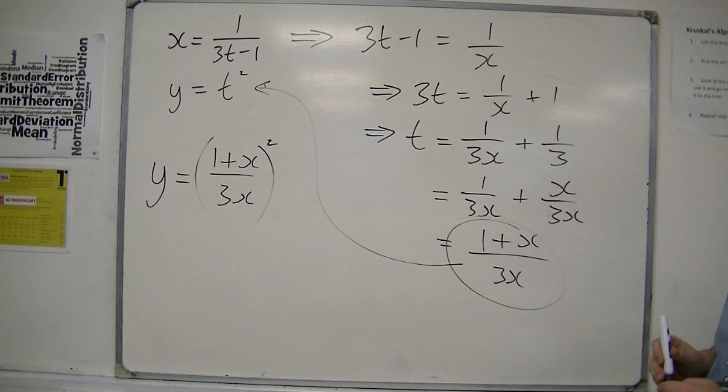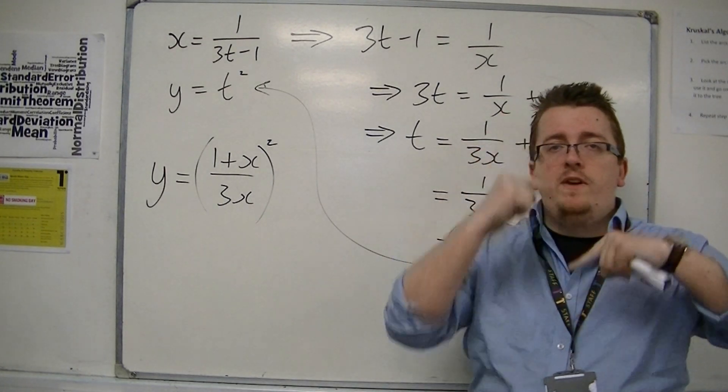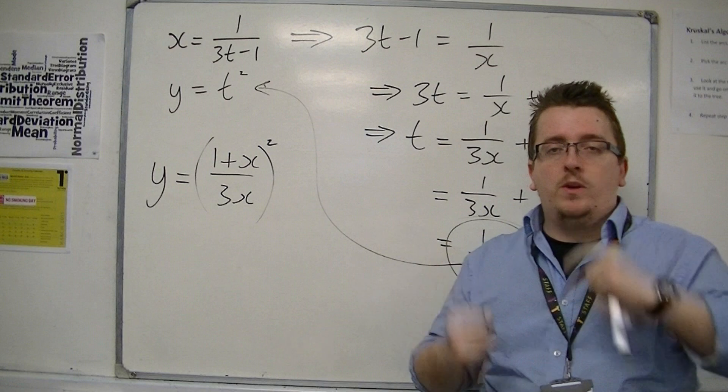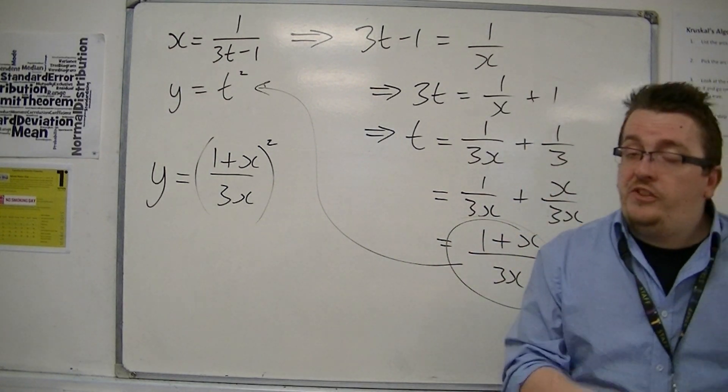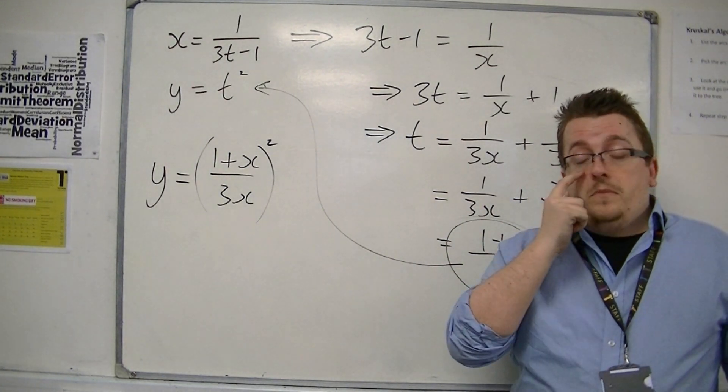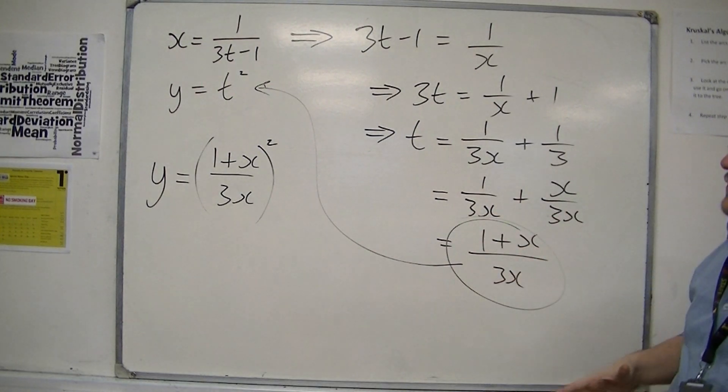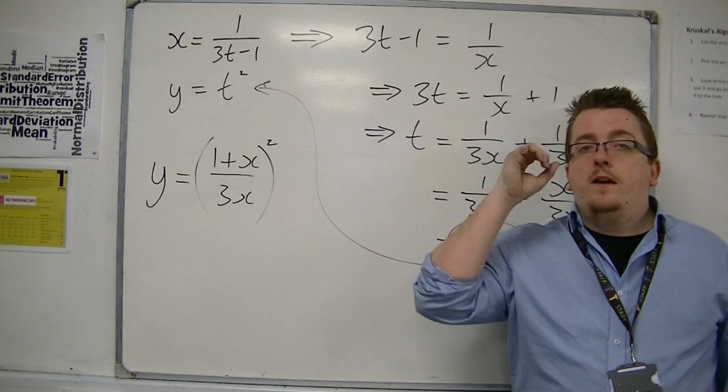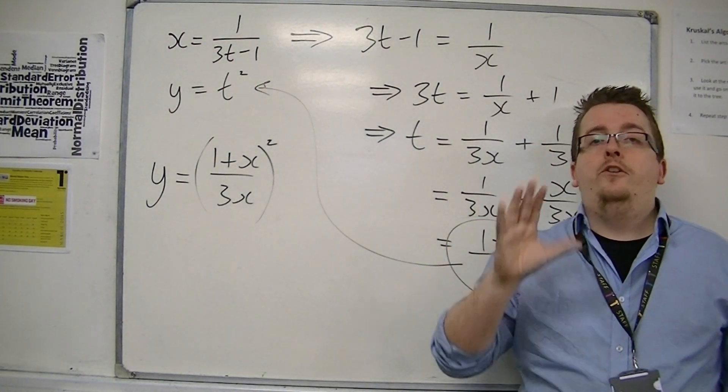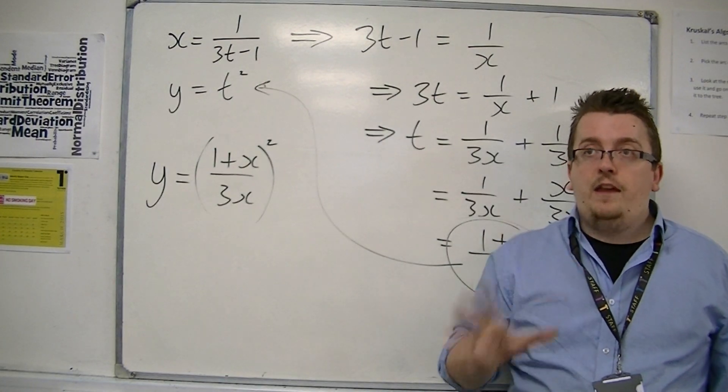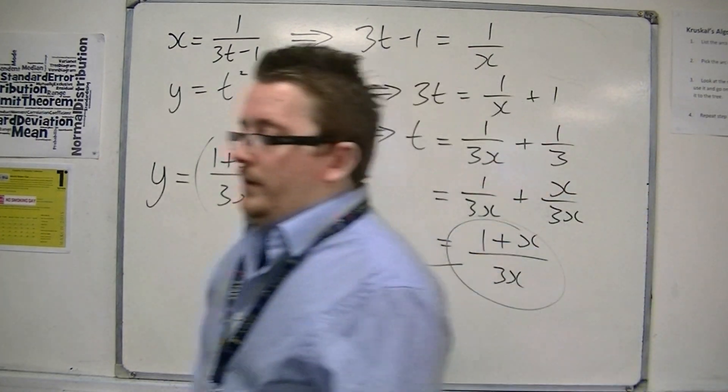So the way that you rearrange your equations to get to a Cartesian equation sometimes does matter, especially in cases like this. So just be wary. Try and keep away from square rooting if you can. Try and keep away from those types of things.